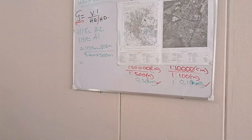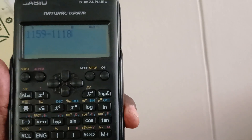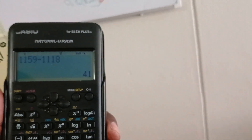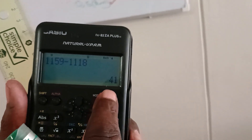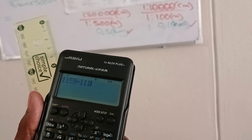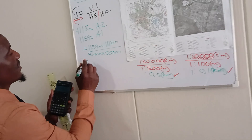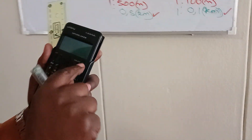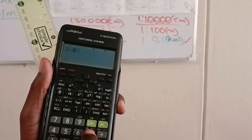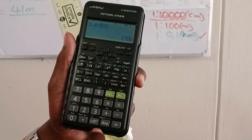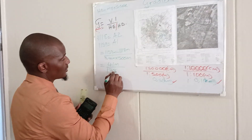So if I subtract now — 1,159 minus 1,118 — I get 41. So my VI is 41 meters. And my horizontal equivalent is 3.4 multiplied by 500 meters — I want the unit of measurement to be the same — which gives me 1,700 meters. So I've got 41 meters over 1,700 meters.